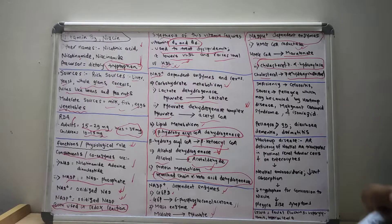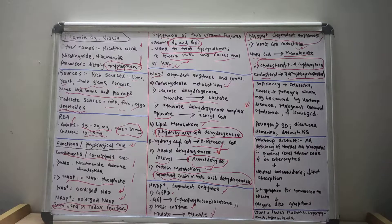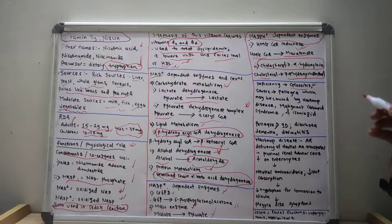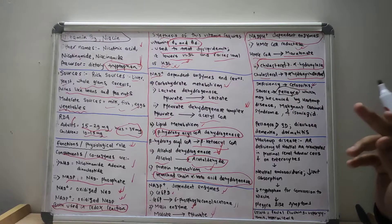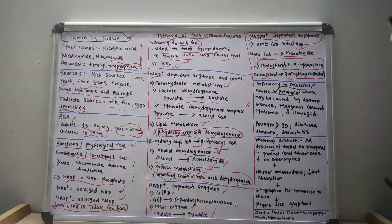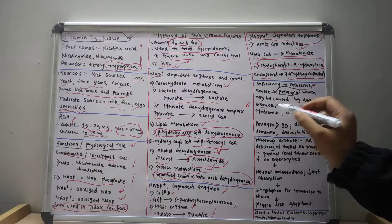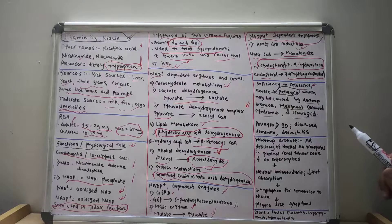Now let us discuss the deficiency of vitamin B3. In minor deficiency there could be glossitis, and in severe deficiency there could be pellagra. Pellagra can occur due to Hartnup's disease, malignant carcinoid syndrome, or due to intake of isoniazid.